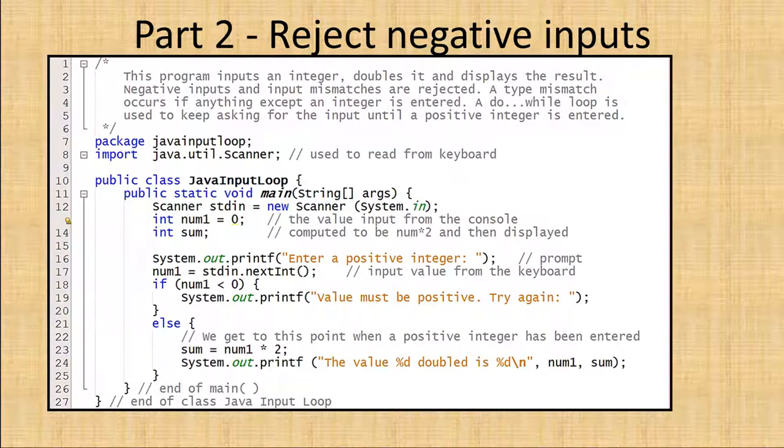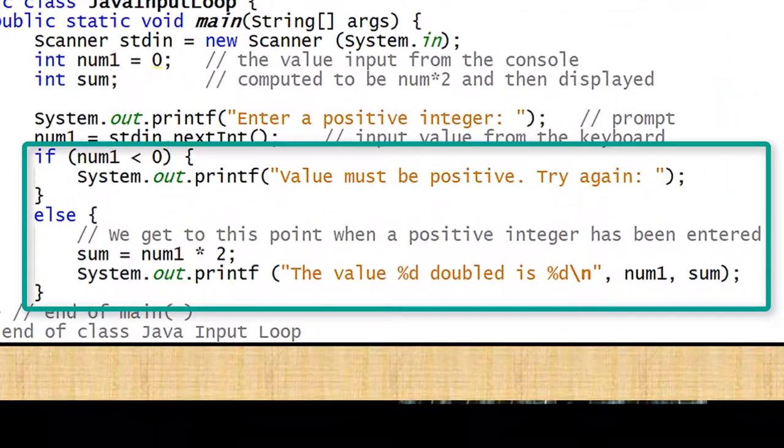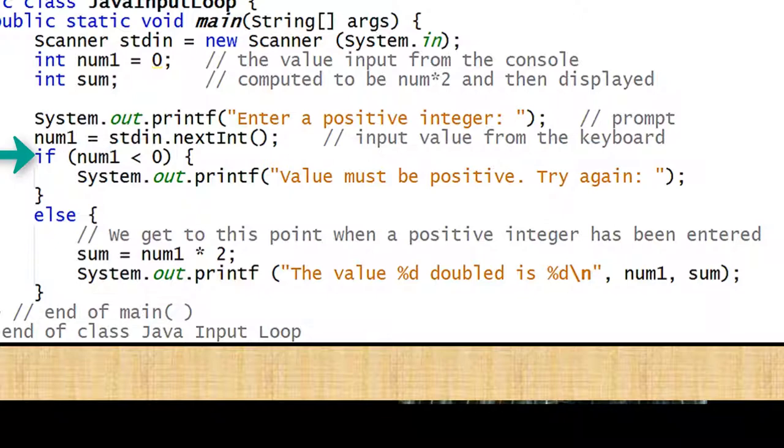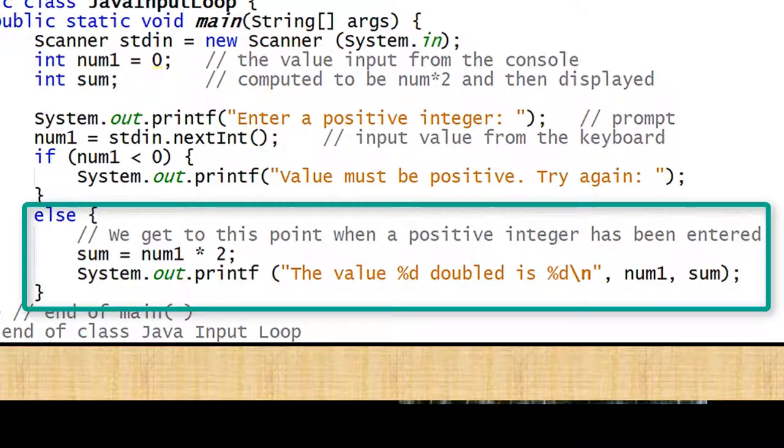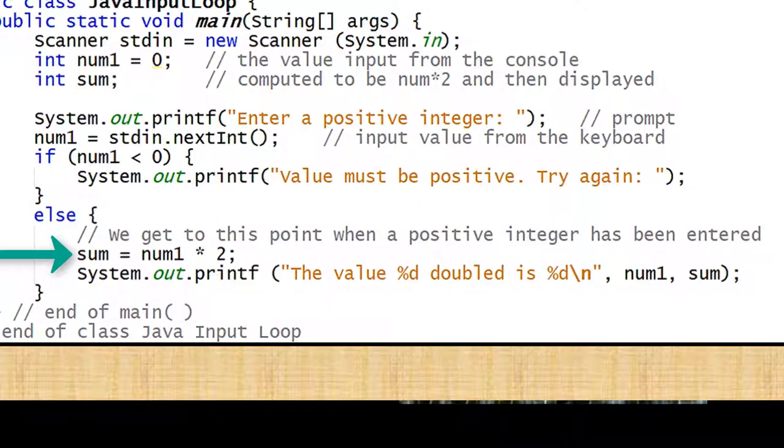I can check for negative numbers right after doing the input from the keyboard. I'm using an if-else construct. The if tests for a negative input. When the comparison expression in the if statement num1 less than 0 is true, the message value must be positive try again is displayed. Only when the if condition is false, the block of code attached to the else is executed. Then the sum is computed to be num1 times 2 and both numbers are displayed.